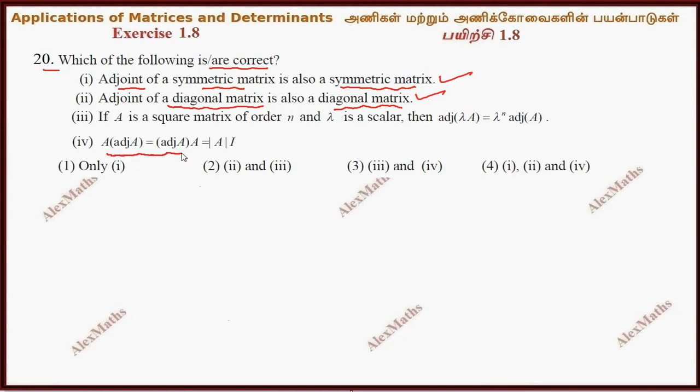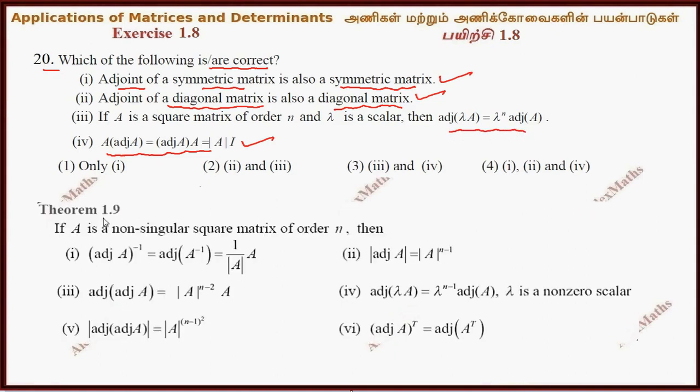This is true. Adjoint of A times A times determinant A times I. This is a theorem in the textbook, theorem 1.9.